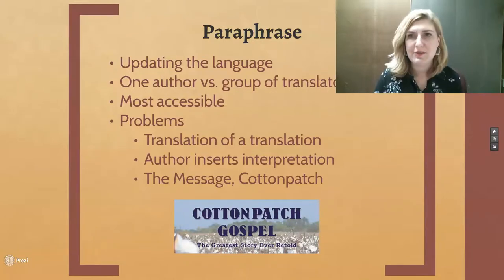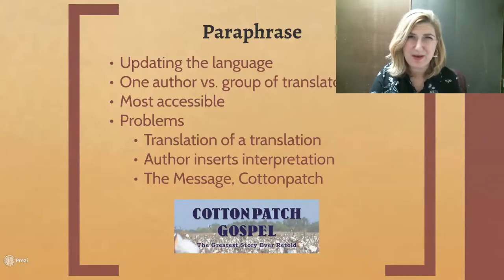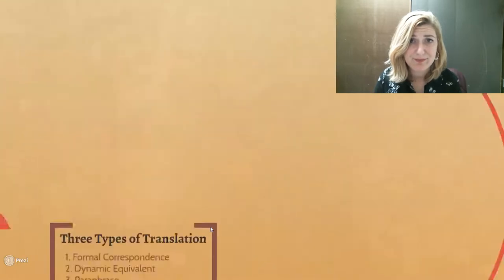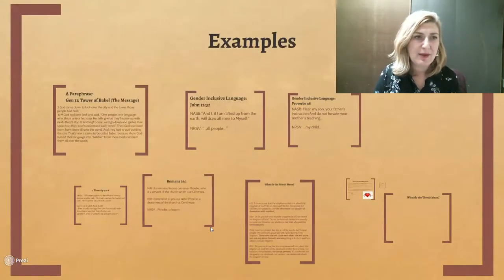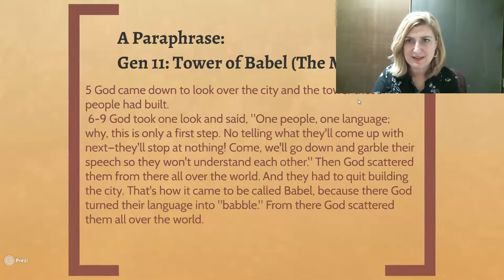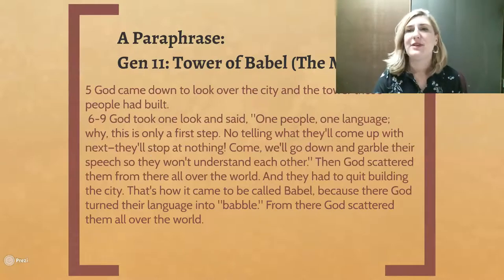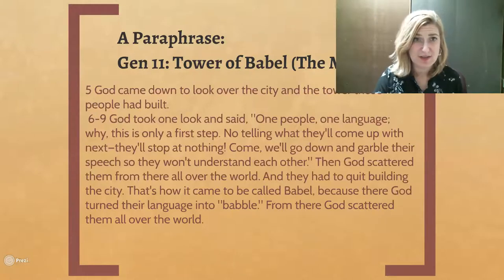The final one is paraphrase. A paraphrase is going to update the language quite a bit and usually has one author versus a team of translators. It's very accessible. An example would be The Message. If you've ever read from The Message, you know that it really puts things very differently — it's very conversational and very accessible. This is just an example from The Message of the very accessible language; it doesn't sound at all like your version in the big red Bible. You can see how the author Eugene Peterson has taken all of Genesis 11 verses 6-9 and kind of smushed them together to create something very conversational and easy to read.